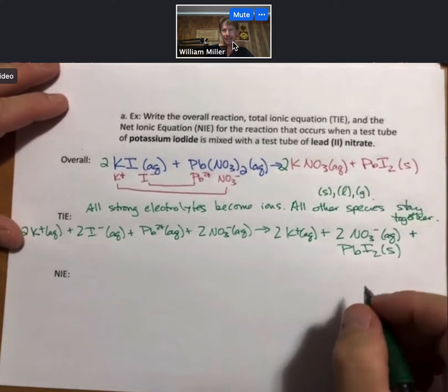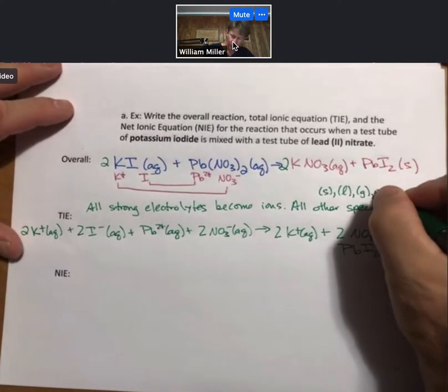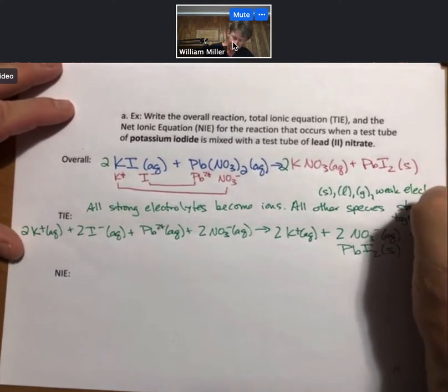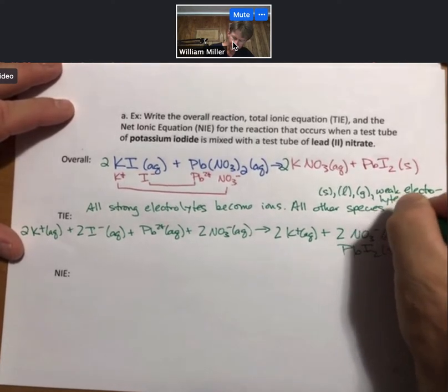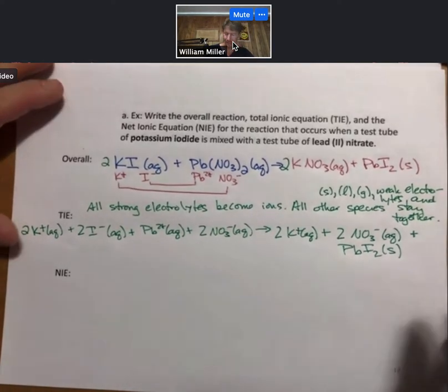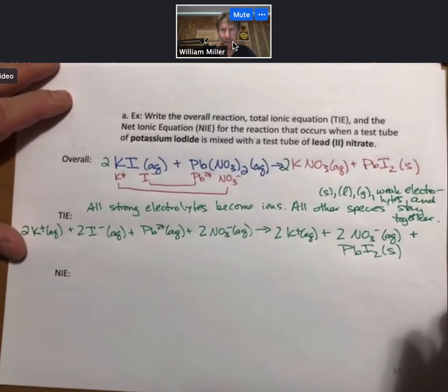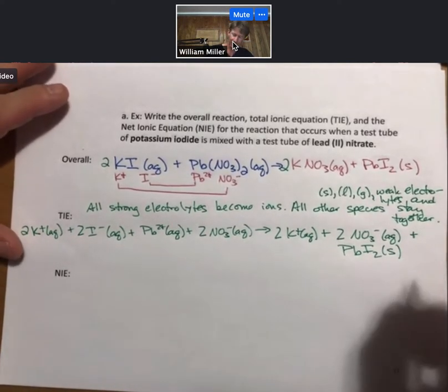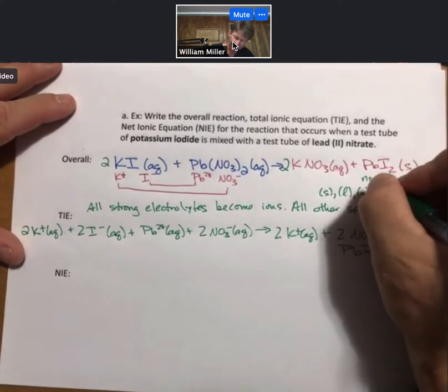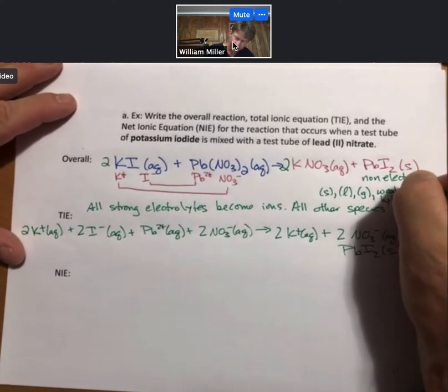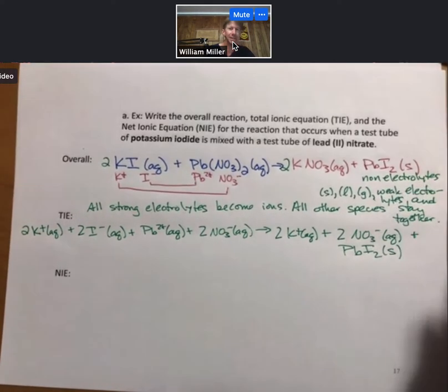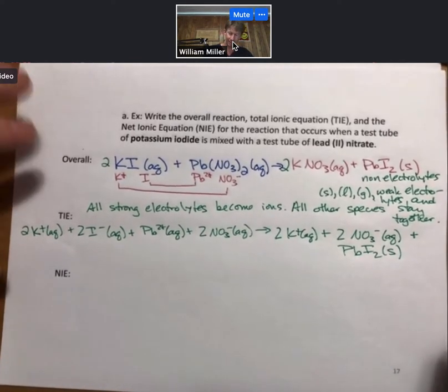gases, weak electrolytes, and non-electrolytes. So everything else is not broken into ions. And we'll see examples of this. So that's a working definition of a TIE, an example.